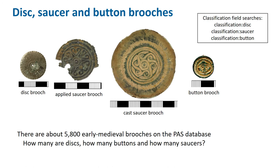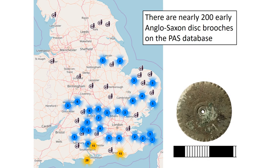We'll now move on to the other types of circular brooches: disc, saucer and button. There is a problem disentangling these on the database because one of the very earliest records — Kent 53, which is a button brooch — contains discussion about how similar these are to saucer brooches, and so the record contains both terms. This record has been referenced many times, so a simple search for 'saucer' also gets many button brooches and vice versa. You'll need to use the correct syntax to search the classification field, as shown in the tutorial.